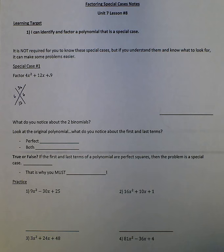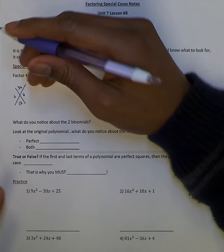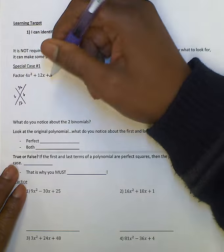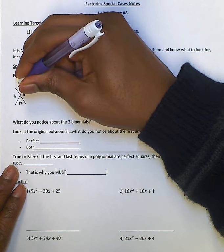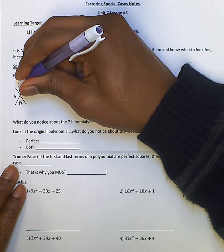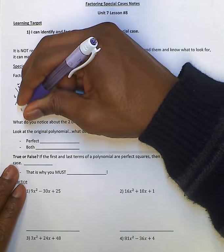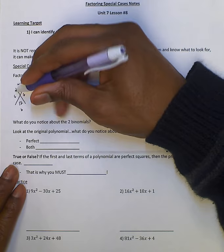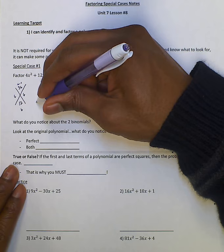Okay, so let's look at special case number one. You'll see that it is a trinomial where a does not equal one. So we're going to try to use the Xbox method. We're going to find two numbers that multiply to give us 4 times 9, which is 36, and add to give us 12. Those two numbers are 6.